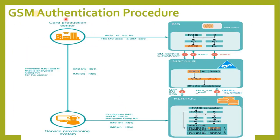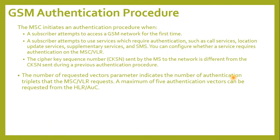GSM authentication procedure. The figure illustrates the GSM authentication procedure in terms of a block diagram, and in upcoming slides we will be discussing the signaling procedures. The HLRAUC and the MS both calculate an SRES and send them to the MSCVLR. The MSCVLR then compares the SRES received from the MS with the SRES received from the HLRAUC. If they match, the authentication is successful.